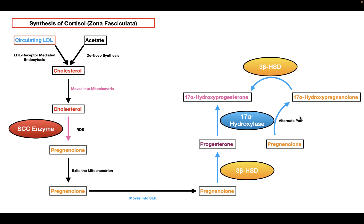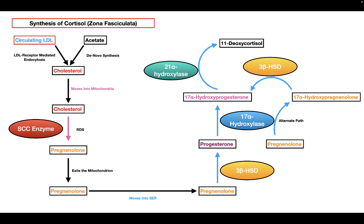Once 17-alpha-hydroxyprogesterone is formed, it is converted into 11-deoxycortisol. This reaction is catalyzed by 21-alpha-hydroxylase in the smooth endoplasmic reticulum.